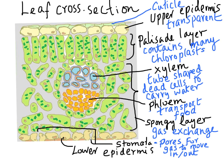How does air enter the leaf? You have the lower epidermis with pores — as you can see here — called stomata, which allow air to enter by diffusion into the leaves. Carbon dioxide in particular diffuses into the cells, while oxygen produced during photosynthesis diffuses out of the leaf through these same pores, moving from an area of higher concentration to lower concentration.